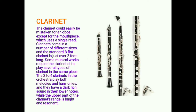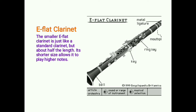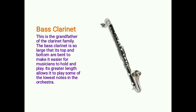The clarinet could easily be mistaken for an oboe except for the mouthpiece, which uses a single reed. Clarinets come in a number of different sizes; a standard B-flat clarinet is just over two feet long. Some musical works require the clarinetist to play several types of clarinet in the same piece. The two to four clarinets in the orchestra play both melodies and harmonies and have a dark, rich sound in their lower notes, while the upper part of the clarinet's range is bright and resonant. The smaller E-flat clarinet is about half the length of a standard clarinet, allowing it to play higher notes.